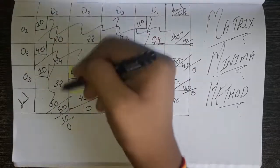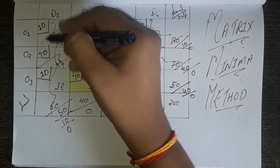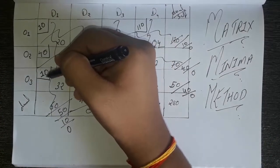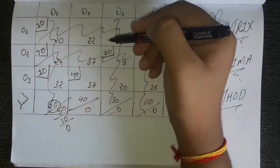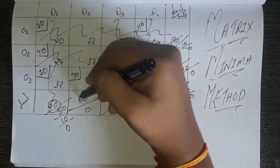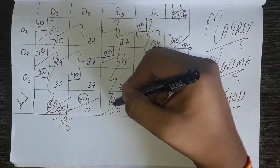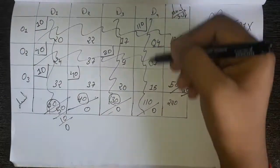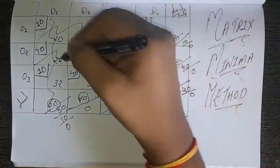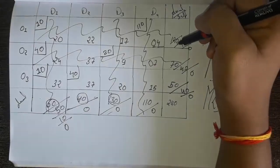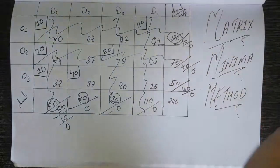Now verify by adding all allocations by column and row. For example, for D1: 10 plus 40 plus 10 equals 60, which matches the original value. 40 matches the original 40, and 30 matches the original 30. Add by column and row and you will get the exact original values.